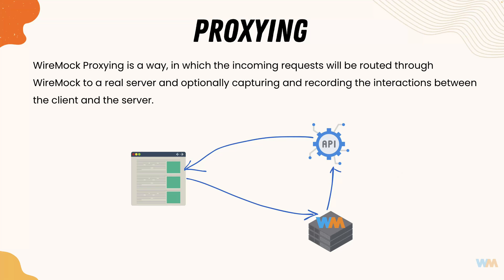Welcome to the next lecture of our course on WireMock.NET. In this lecture we'll be talking about proxying in WireMock.NET. WireMock proxying is a way in which the incoming request will be routed through WireMock to a real server, and optionally capturing and recording the interaction between the client and the server.